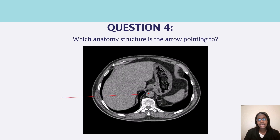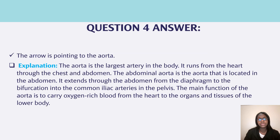Question four, which anatomy structure is the arrow pointing to? The arrow is pointing to the aorta. The aorta is the largest artery in the body. It runs from the heart through the chest and abdomen. The abdominal aorta is located in the abdomen and extends from the diaphragm to the bifurcation into the common iliac arteries in the pelvis. The main function of the aorta is to carry oxygen-rich blood from the heart to the organs and tissues of the lower body.